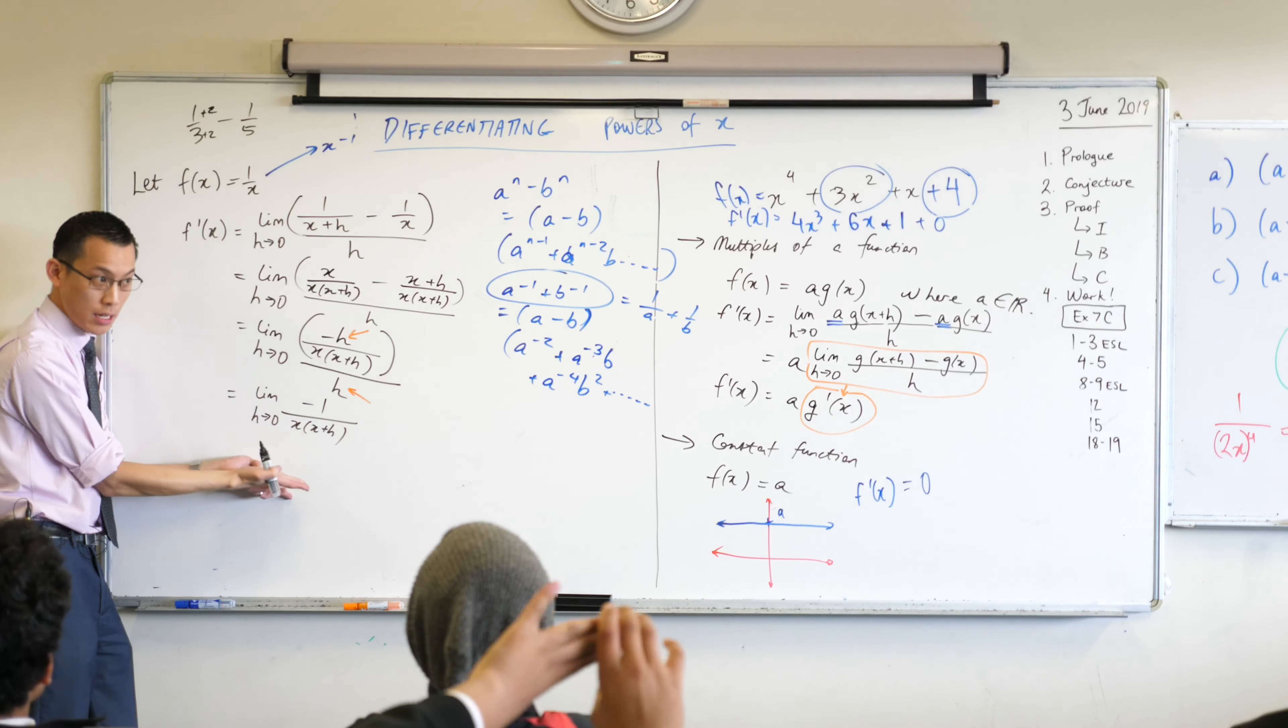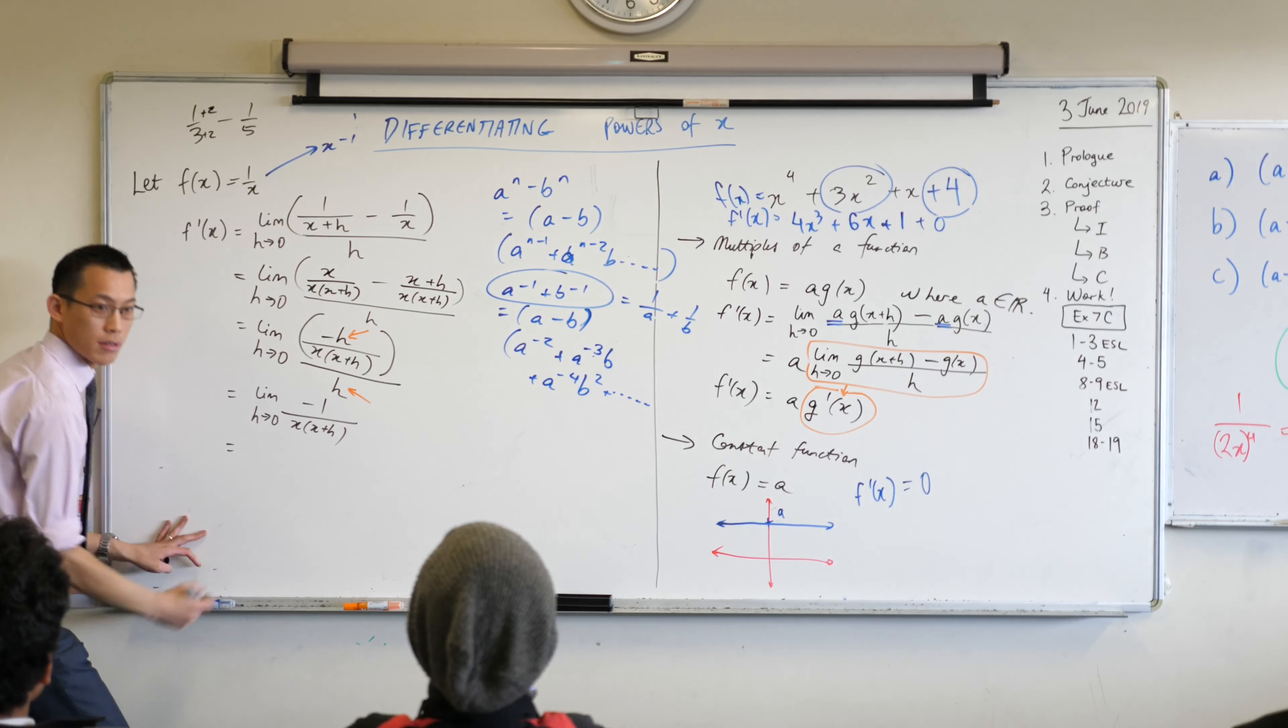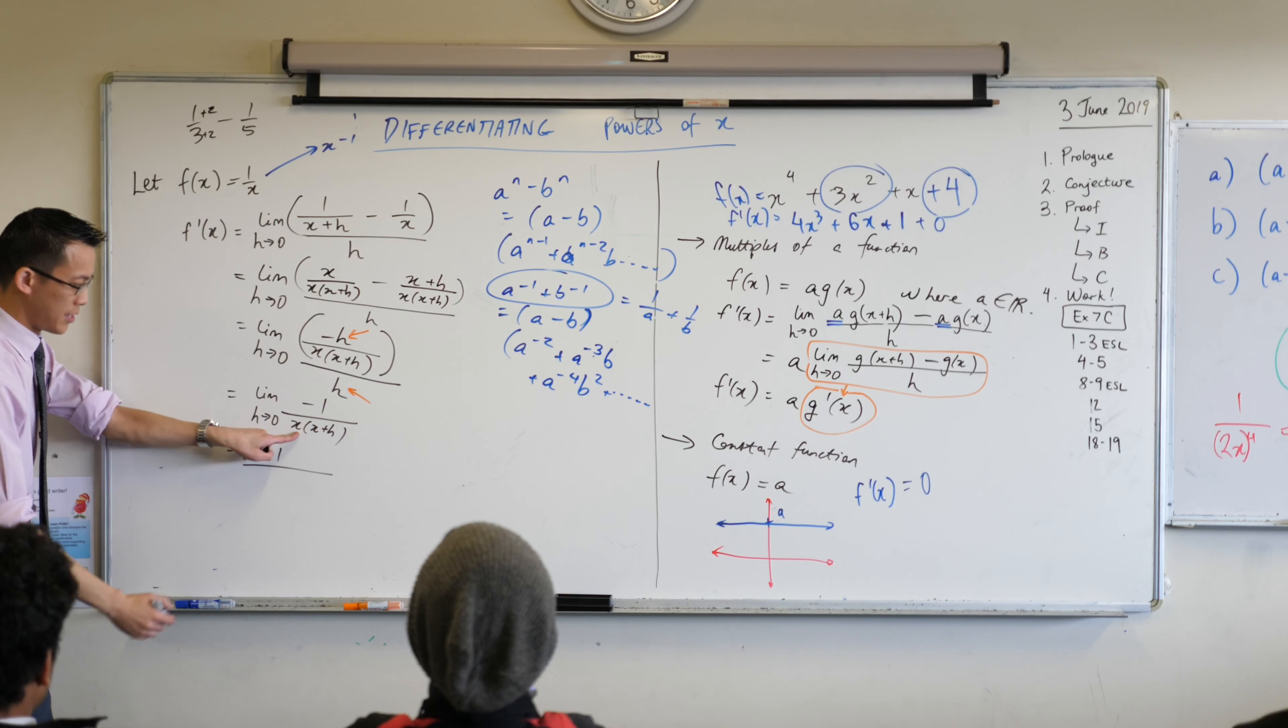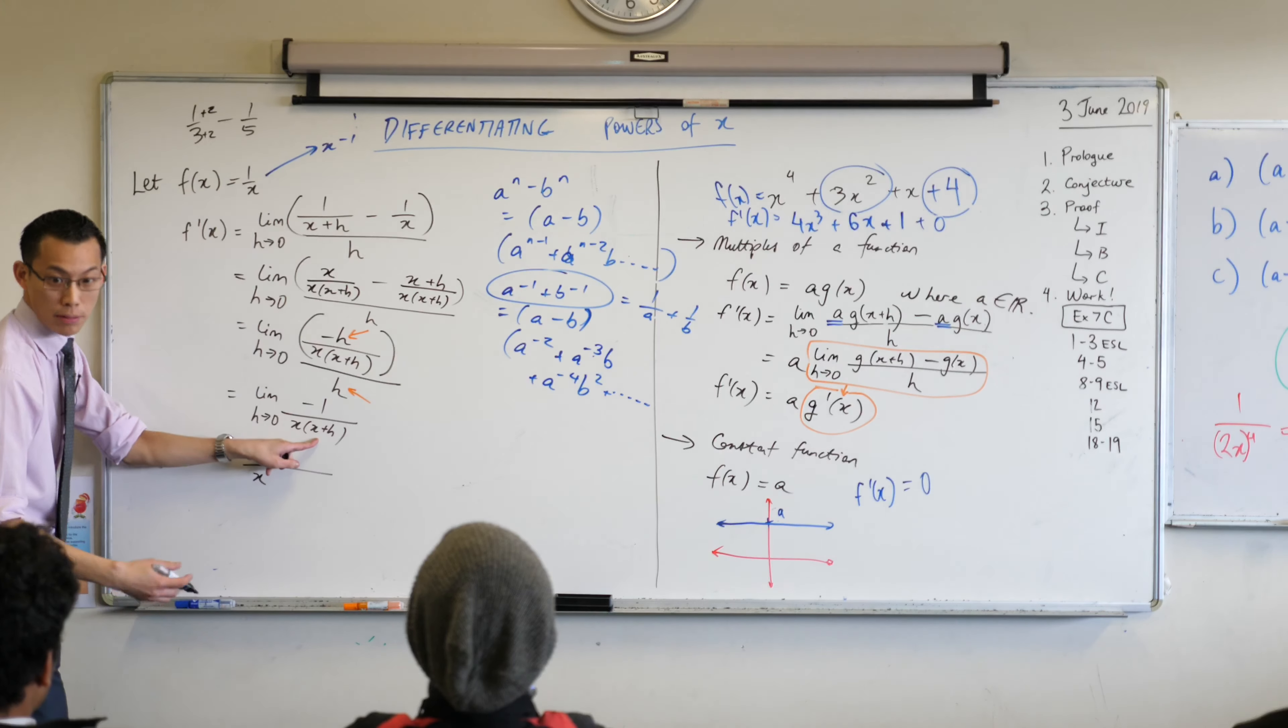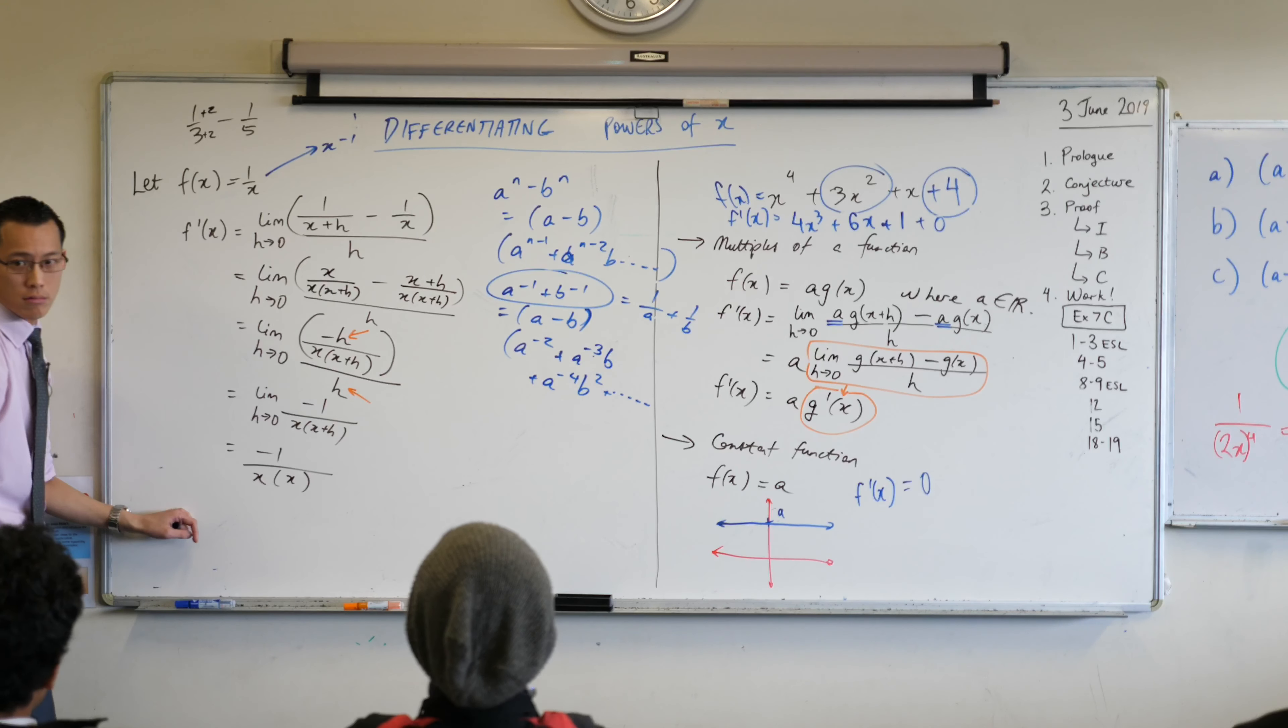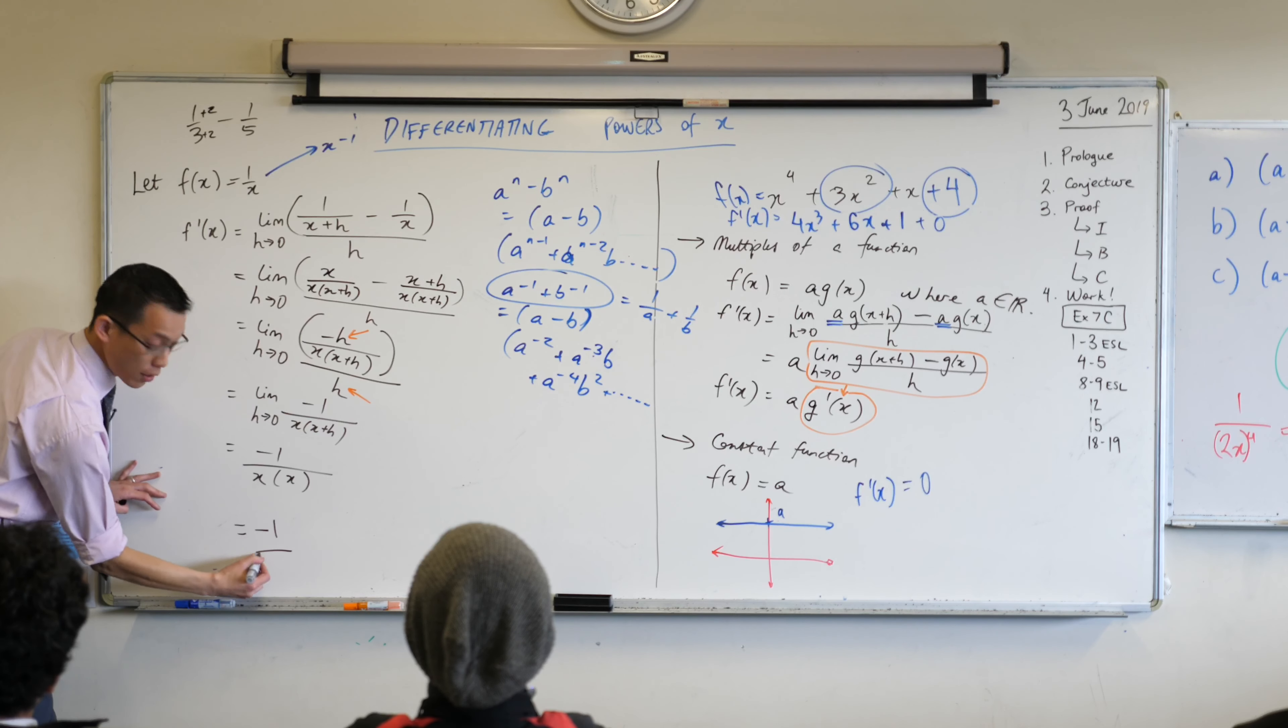What will happen? You get minus one over, this is just x, and then this becomes x plus zero. So in fact this is just x. Can you simplify this for me? Minus one over x squared.